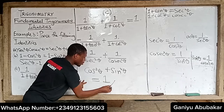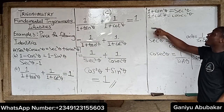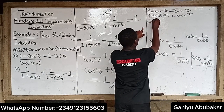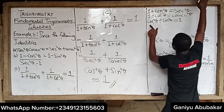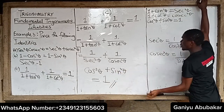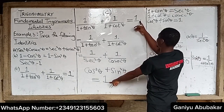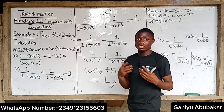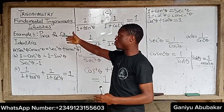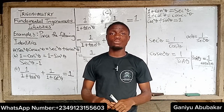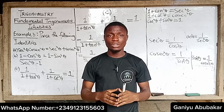And my final answer is one, because we know that cos squared theta plus sin squared theta equals one. So the identity is proved. You have to solve this particular problem using the concept of trigonometric identity. In our next class, we'll try to prove several other identities.